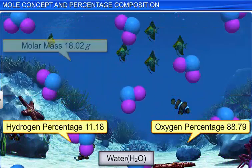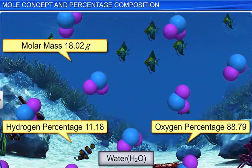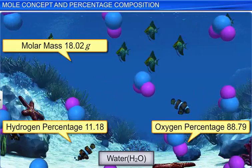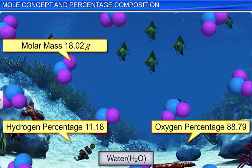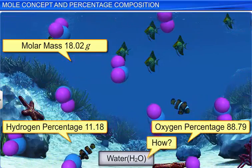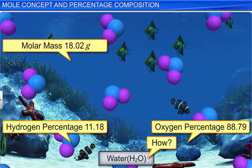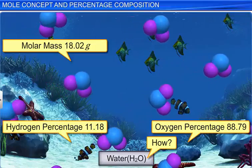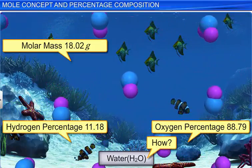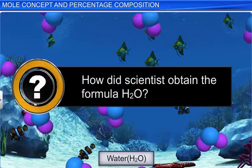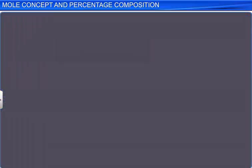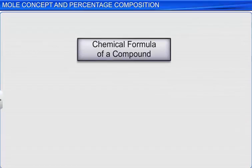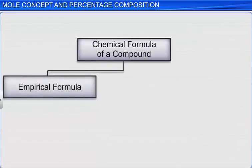Molar mass and percentage composition help us understand the quantitative data associated with a chemical compound. But how does one arrive at the chemical formula of a compound? In other words, how did scientists obtain the formula H₂O? The chemical formula of a compound is derived from two parts: the empirical formula and the molecular formula.